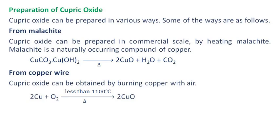Cupric oxide can be prepared in various ways. From malachite, cupric oxide can be prepared on a commercial scale by heating malachite. Malachite is a naturally occurring compound of copper, and on heating it gives cupric oxide along with water and carbon dioxide, as shown in the reaction.